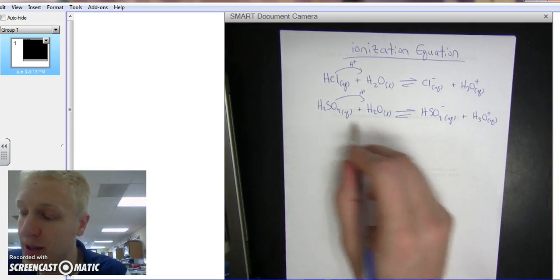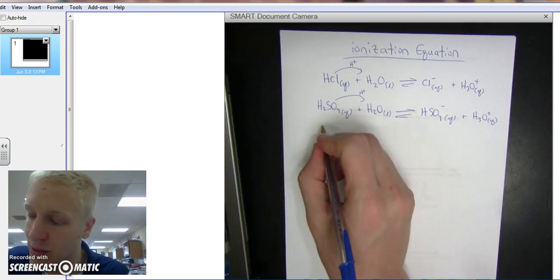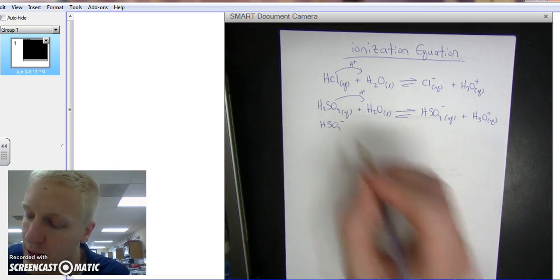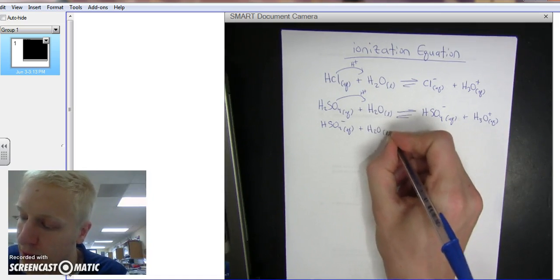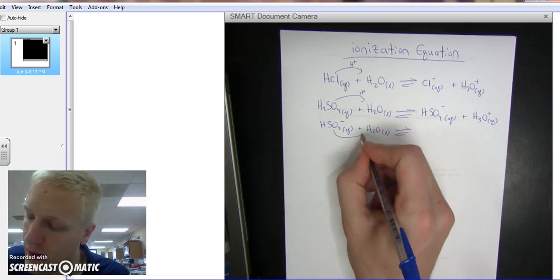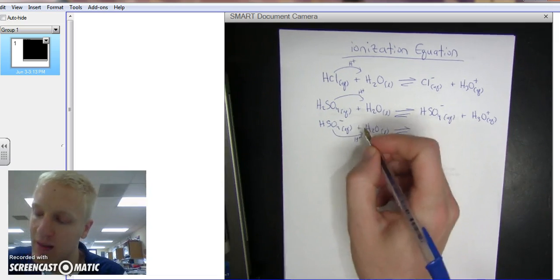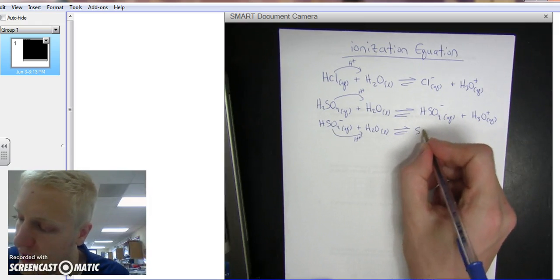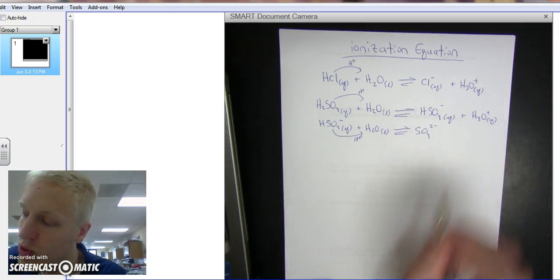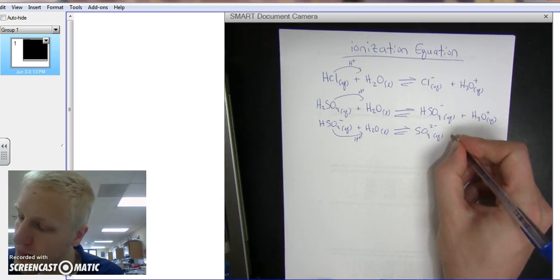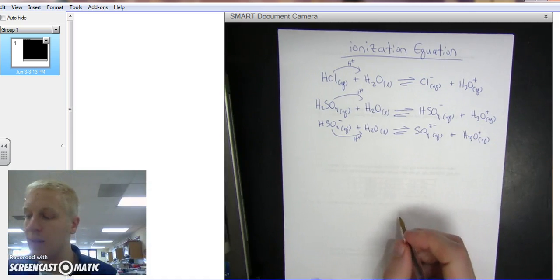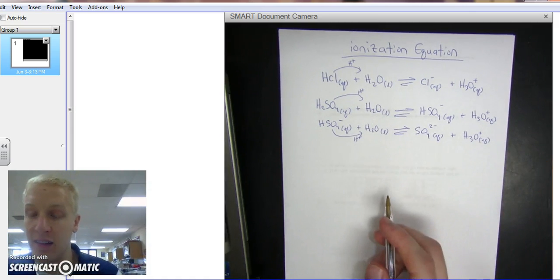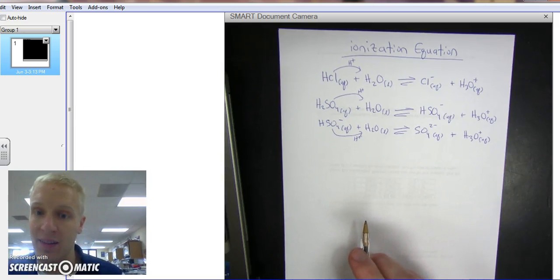However, you can't stop there, you've got to write all of the ionization equations. So we're going to continue on with our HSO4 minus charge, this is aqueous, and we're going to add some more water, liquid. And the H+ is going to be given off of this same acid, and it's going to form SO4 now, 2 minus aqueous, plus again H3O+, aqueous. So there are two ionization equations for a diprotic acid, such as H2SO4, because it has two hydrogens.